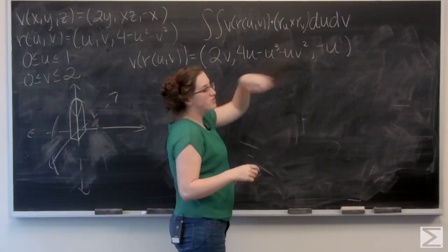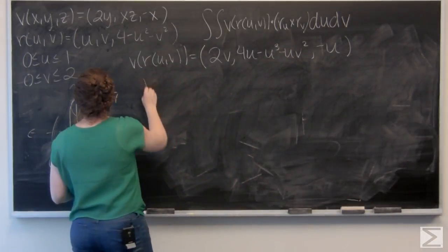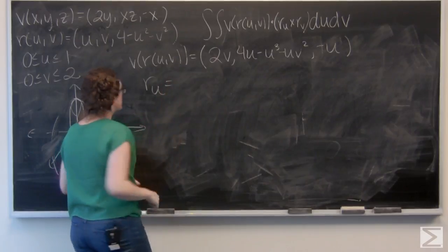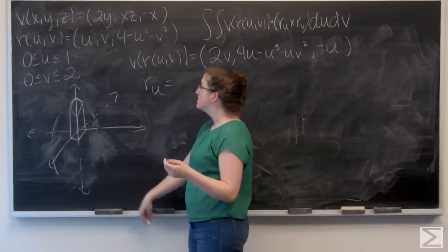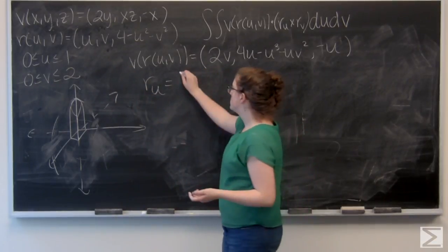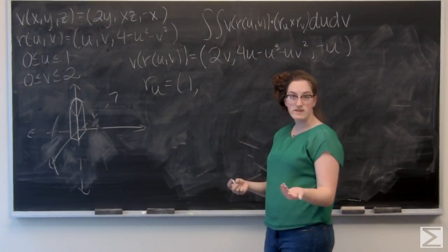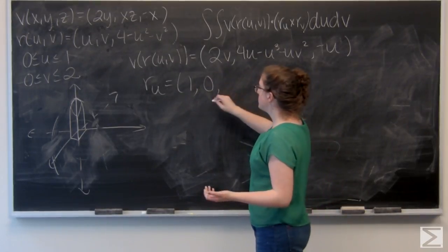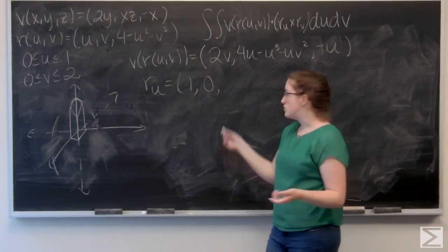Now I need to find r_u cross r_v. Well, before I can do that, I need to find r_u and r_v. So let's start with r_u. I want to take the partial derivative with respect to u of each component in r. So, the partial derivative of u with respect to u is just going to be 1. The partial derivative with respect to v is going to be 0, because v is treated like a constant. And the partial derivative of 4 minus u squared minus v squared is going to be negative 2u.